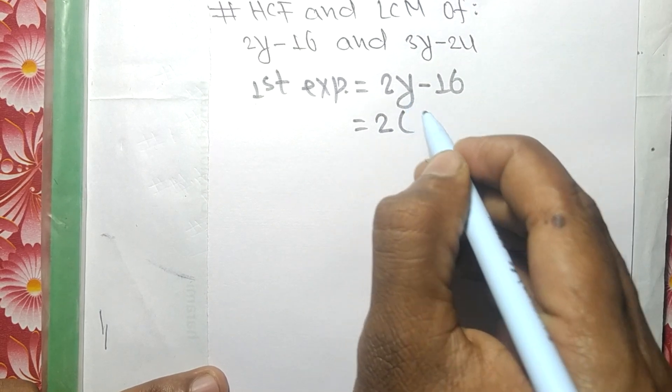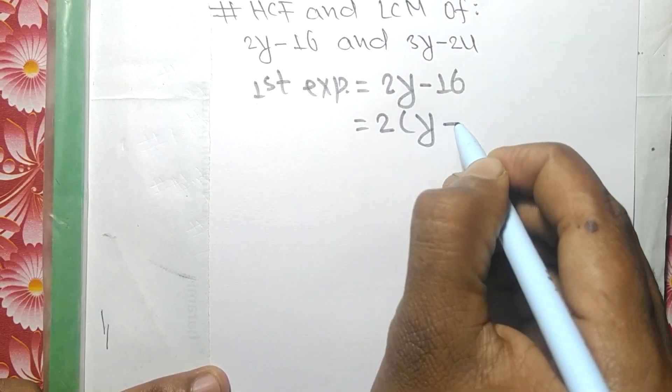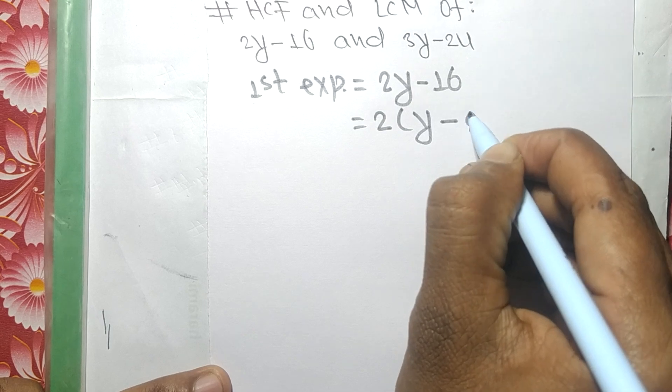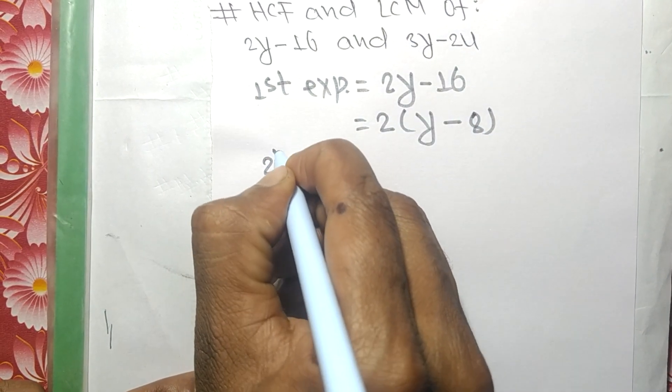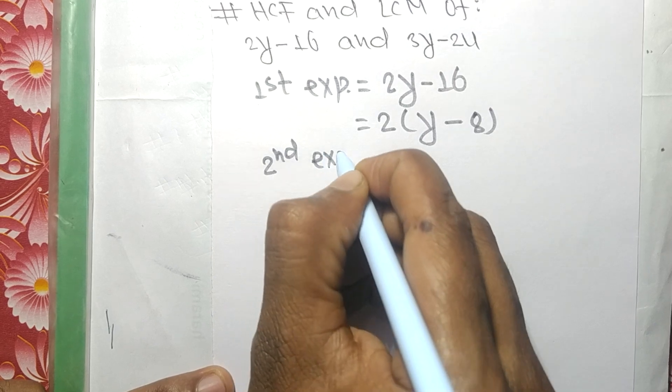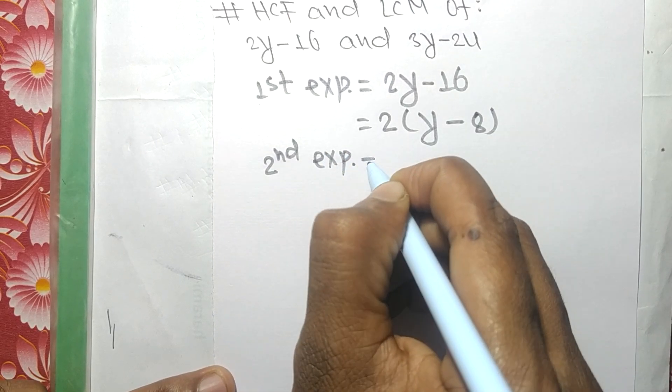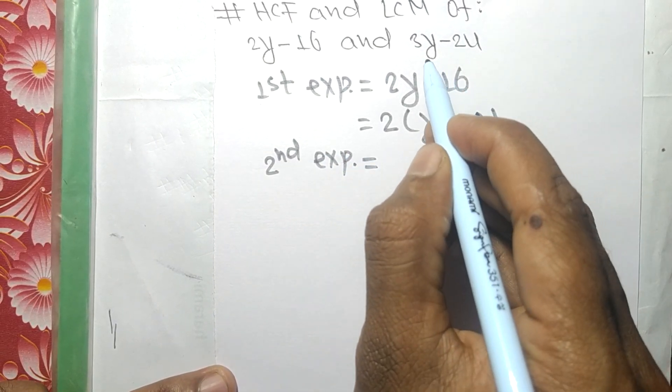2. Remaining in the first is y minus 8, as 2 times 8 equals 16. The second expression is equal to...